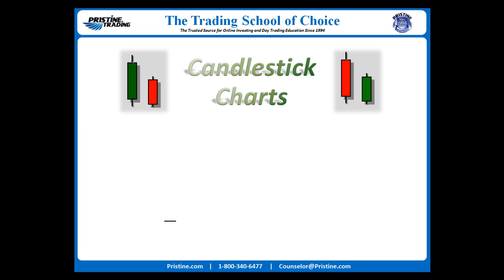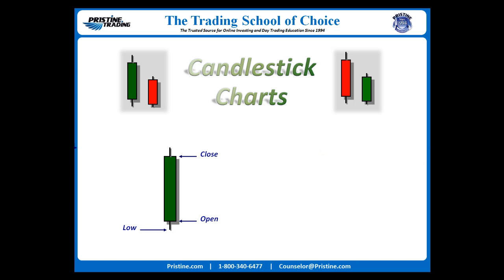There are four pieces of information contained in every candlestick: there is an opening price, the low for the time period, the closing price, and the high for the time period. If the closing price is above the opening price, it is colored green, and we consider the candle to be won by the bulls.